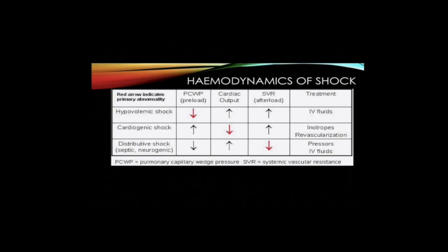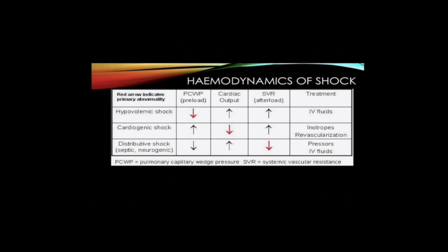Cardiogenic shock is due to myocardial pump dysfunction. Treatment is with inotropes and coronary revascularization, if applicable. In distributive shock, there is inappropriate vasodilation and maldistribution of blood flow within the microcirculation. Cardiac output is typically preserved or increased. Common causes include severe sepsis, neurogenic shock, and anaphylaxis. Treatment is with intravenous fluids and vasopressors.